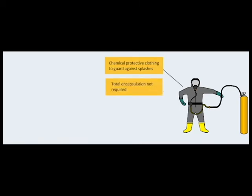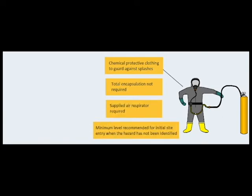Level B protection includes chemical protective clothing that guards against splashes, but total encapsulation is not required. Like Level A, a supplied air respirator is required. This is the minimum level of protection recommended for initial site entry teams when the hazard has not been identified or defined by monitoring, sampling, or research.